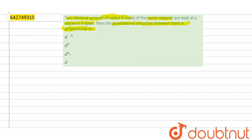Let's find out. Two spheres having radius R are kept at d distance apart.